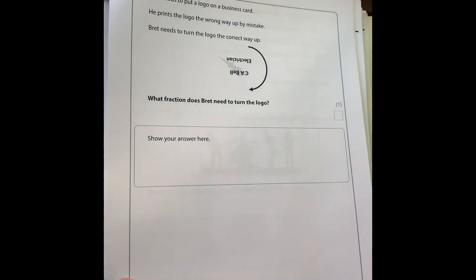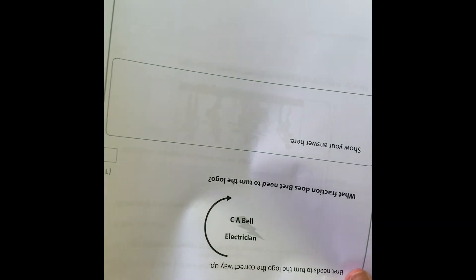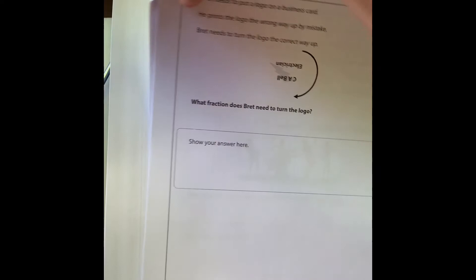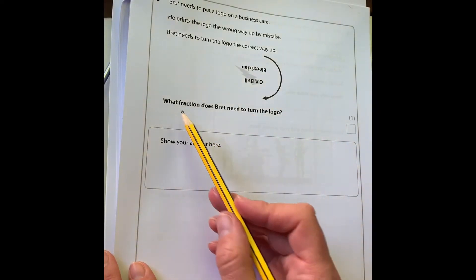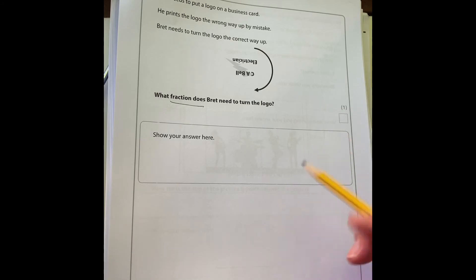Number nine: Brett prints his logo the wrong way up by mistake. He needs to turn the logo the correct way up. You can see he's actually done it completely upside down. Because it says fraction, we need to make sure our answer is a fraction.